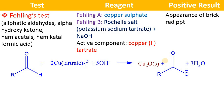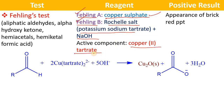Fehling's test uses Fehling's A — copper sulfate, a blue color solution — and Fehling's B, which is a colorless solution of Rochelle's salt, that is potassium sodium tartrate and sodium hydroxide. Before starting the experiment you have to mix Fehling's A and Fehling's B to form copper(II) tartrate, since this complex is highly unstable. When you treat Fehling's reagent with aliphatic aldehydes, alpha-hydroxy ketones, hemiacetals, hemiketals, or formic acid, there is an appearance of a brick red precipitate due to formation of cuprous oxide.